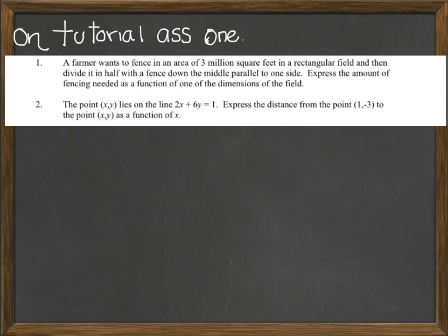So the problem is like this. A farmer wants to fence an area of 3 million square feet in a rectangular field and then divide it in half with a fence down the middle parallel to one side. The objective of the exercise in assignment 1 was to express the amount of fence needed as a function of one of the dimensions of the field.